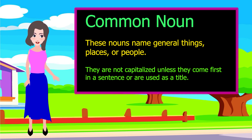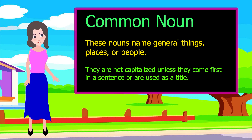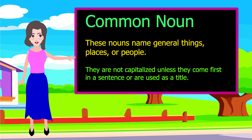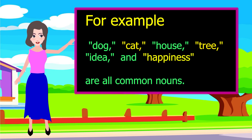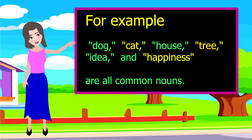Common nouns name general things, places, or people. They are not capitalized unless they come first in a sentence or are used as a title. For example, dog, cat, house, tree, idea, and happiness are all common nouns.